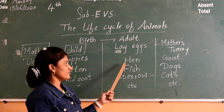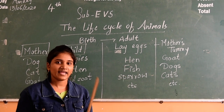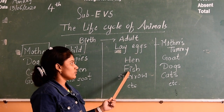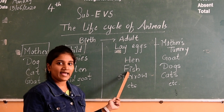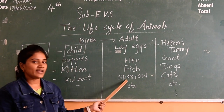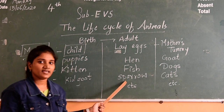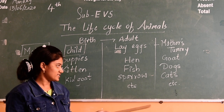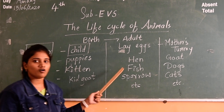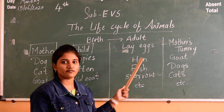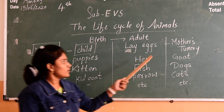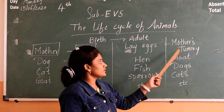First of all, we know the hen lays eggs. Fish also lay eggs in the water. Sparrows lay eggs in the nest. These are the examples of animals which lay eggs.